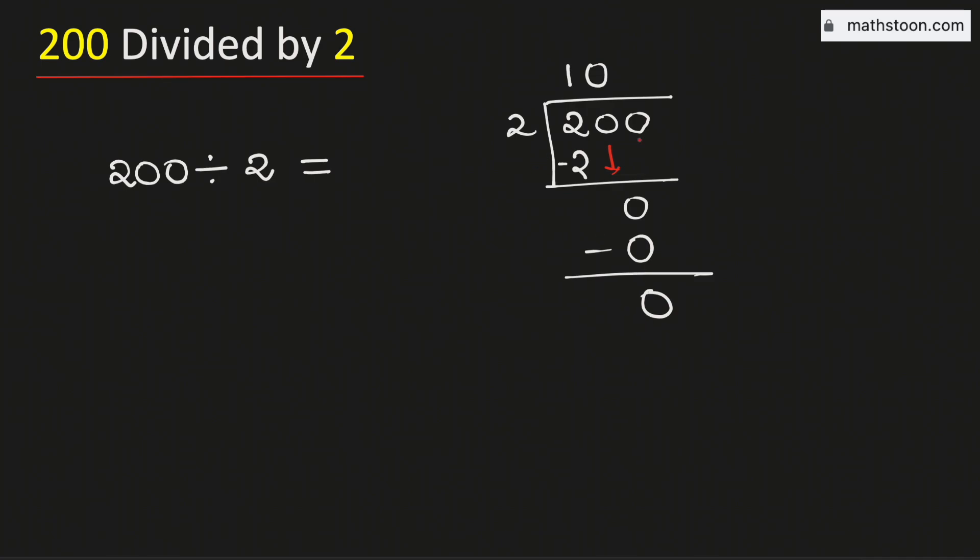As 0 is less than 2, we will bring down this number 0 here. This is the number 0 again. 2 times 0 is 0, subtract we get nothing.